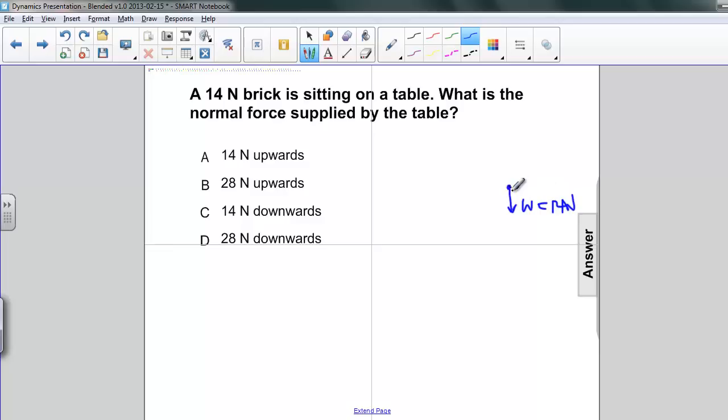But the object isn't moving. The net force on here must be zero. In order for that to happen, there has to be another force that has to be exactly opposite to it, exactly the same size and opposite direction. That's the normal force.